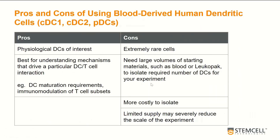Given this information, what source of dendritic cells will be feasible for our experiments? Here is a pros and cons list to consider. Having physiological dendritic cells of interest can be beneficial when you want to better understand the mechanisms that drive a particular DC-T-cell interaction. However, these cells are extremely rare, meaning you will need very large volumes of starting materials such as blood or leukapak to isolate the required number of DCs. This can be very costly, and you will still have a very limited supply of DCs that may severely reduce the scale of your experiment.